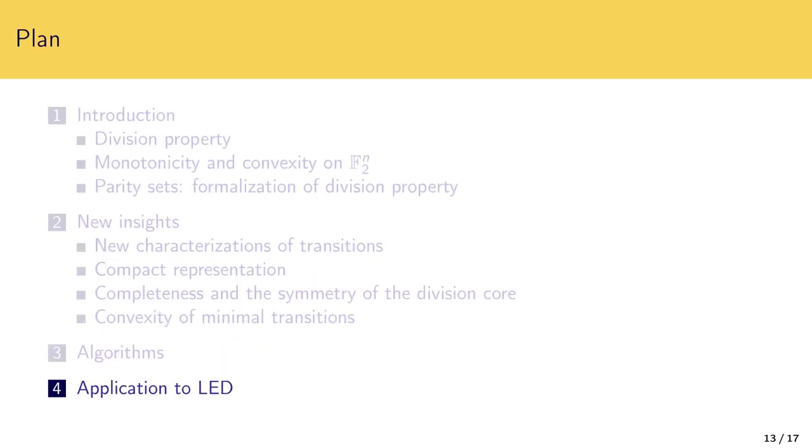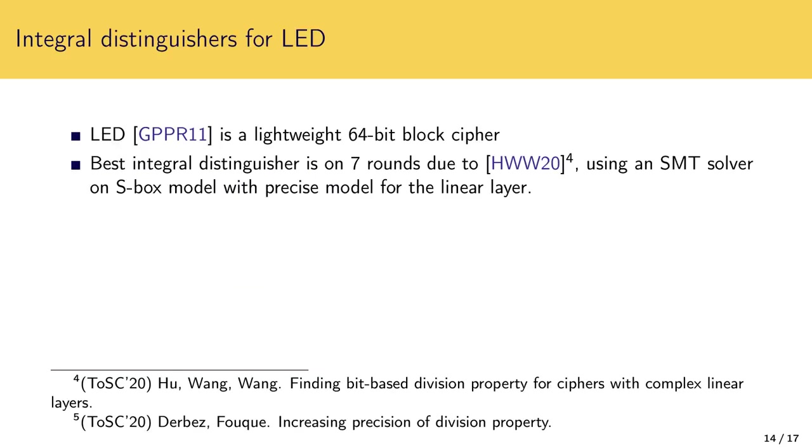Finally, I will briefly mention our application to LED. Unfortunately, while compact modeling greatly expands feasibility of modeling division property, we could not find other interesting applications with large s-boxes. LED is a lightweight block cipher published at CHES 10 years ago. Best integral distinguisher is on 7 rounds due to Hu Wang Wang, who used an SMT solver to model the linear layer precisely for the first time. I recall that with our method, we can model it with CNF directly.